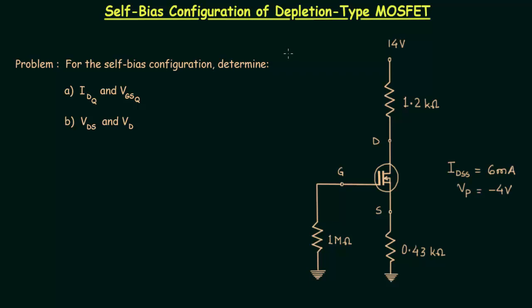In the previous lecture we completed introduction to depletion type MOSFET biasing. Now in this lecture we will discuss the self bias configuration of N-channel depletion type MOSFET. We will start directly with one problem and in this problem there are two parts.